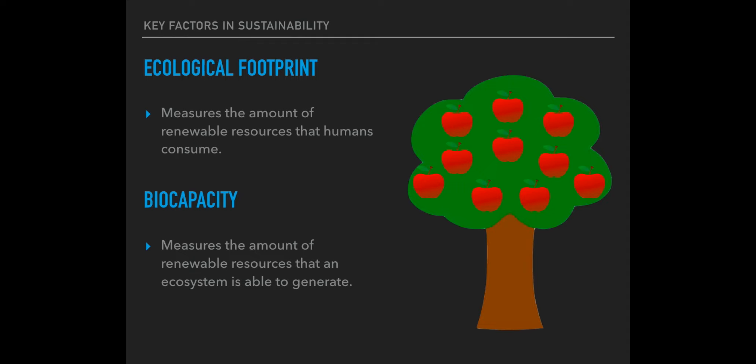Let's take an apple tree as an example. Let's say you had an apple tree in your backyard and it produced 10 apples a day, and you ate one apple a day — so nine apples would rot and go into the ground each day. You decided to share with your family, so now five apples were eaten and five were left. This relationship is sustainable because the rate at which you and your family are eating apples is less than the rate at which the apples are produced.